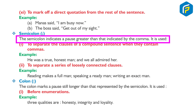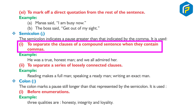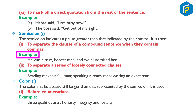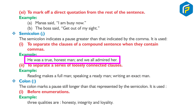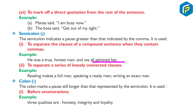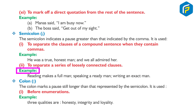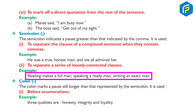Semicolon: The semicolon indicates a pause greater than that indicated by the comma. It is used: one, to separate clauses of a compound sentence when they contain commas. Example: He was a true, honest man, and we all admired him. Two, to separate a series of loosely connected clauses. Example: Reading makes a full man; speaking, a ready man; writing, an exact man.